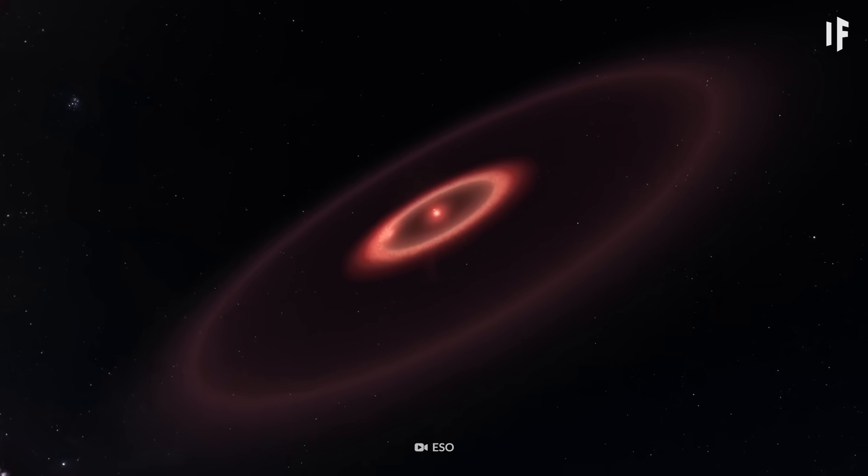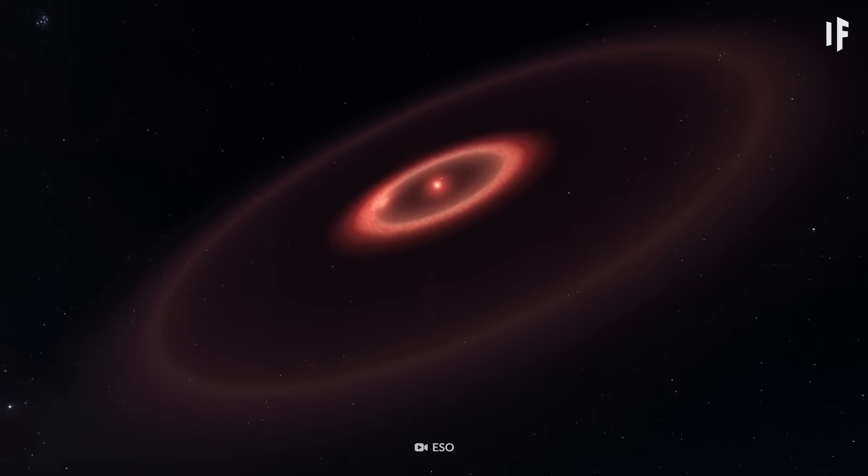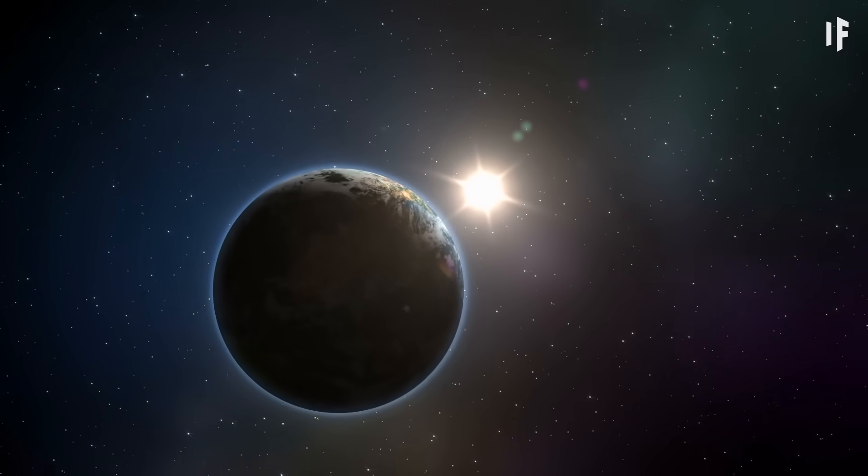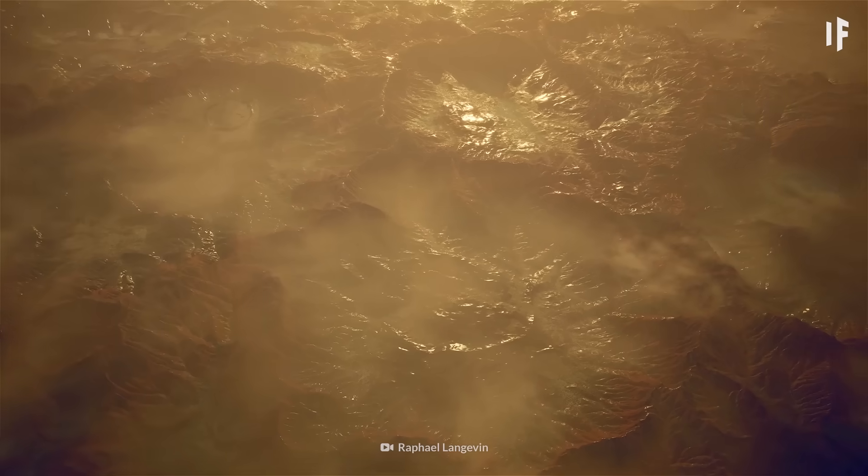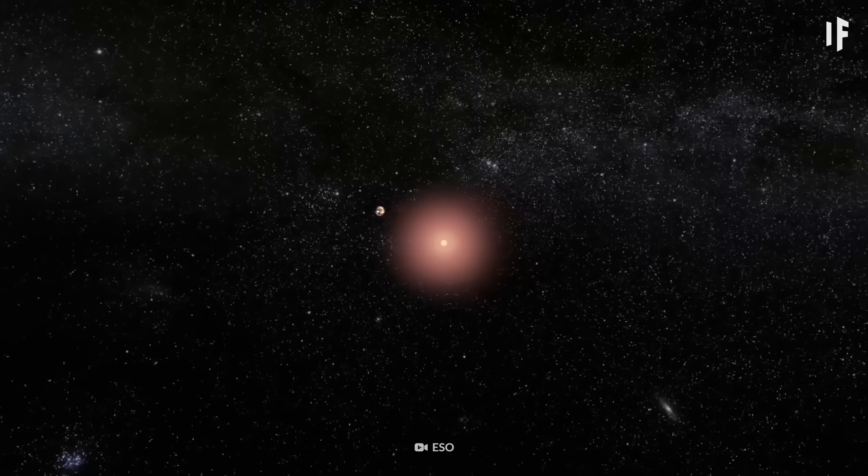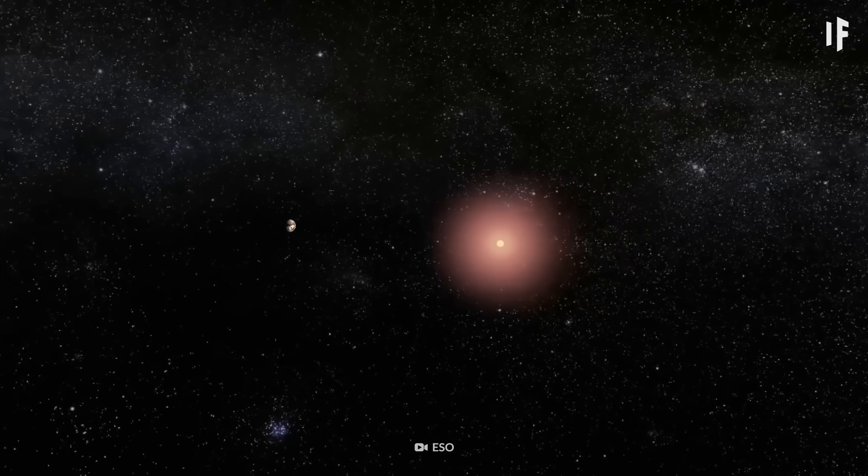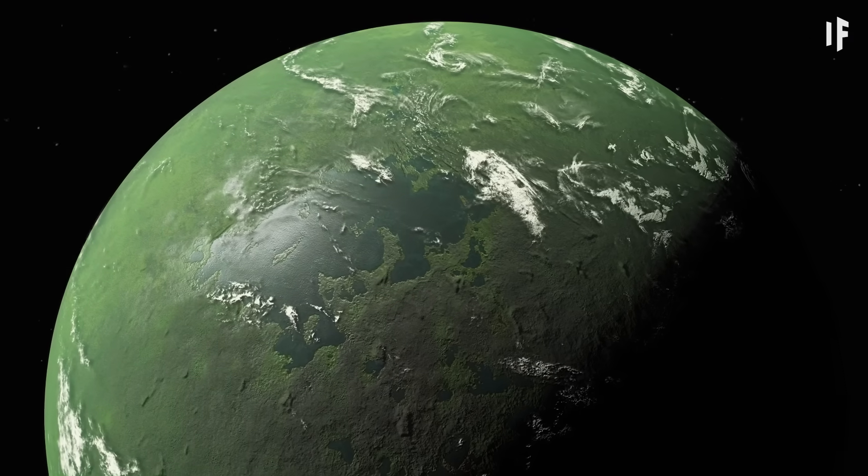There are planets that orbit their stars at a safe distance, just like the Earth orbits the Sun. We've yet to study those worlds in depth, but some of the exoplanets we've found so far could be even better for life than Earth.